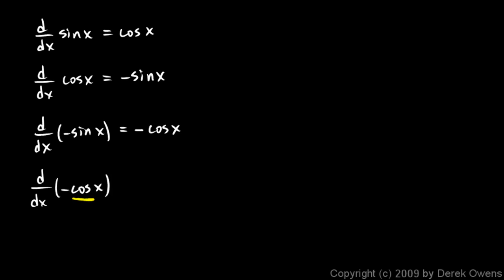We know how to differentiate the cosine function. So for negative cosine, the negative just pops out front, and we have the negative of the derivative of cosine, which is negative negative sine x — so it's just sine x. We see a pattern: the derivative of sine is cosine, the derivative of cosine is negative sine, the derivative of negative sine is negative cosine, and the derivative of negative cosine is sine.